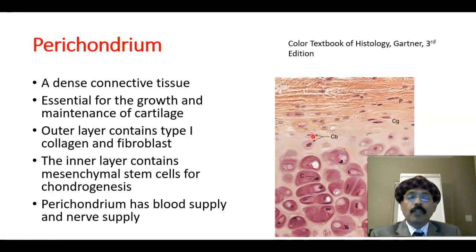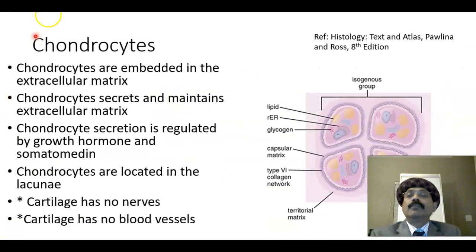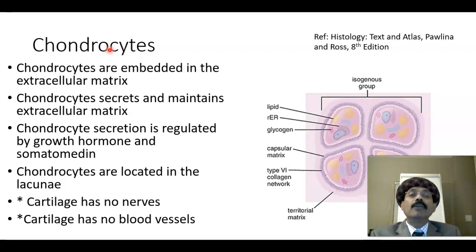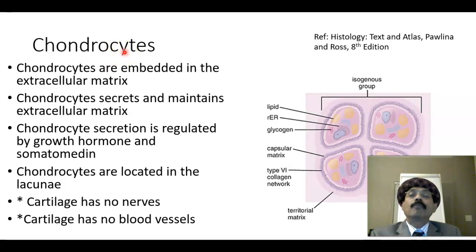Chondroblasts are usually smaller than chondrocytes. Chondrocytes come out of chondroblasts, and chondroblasts come from mesenchymal cells — the embryonic form of connective tissue cells. So from mesenchymal cells we get chondroblasts, and from chondroblasts we get chondrocytes. The chondrocytes are embedded in the extracellular matrix and secrete and maintain it.